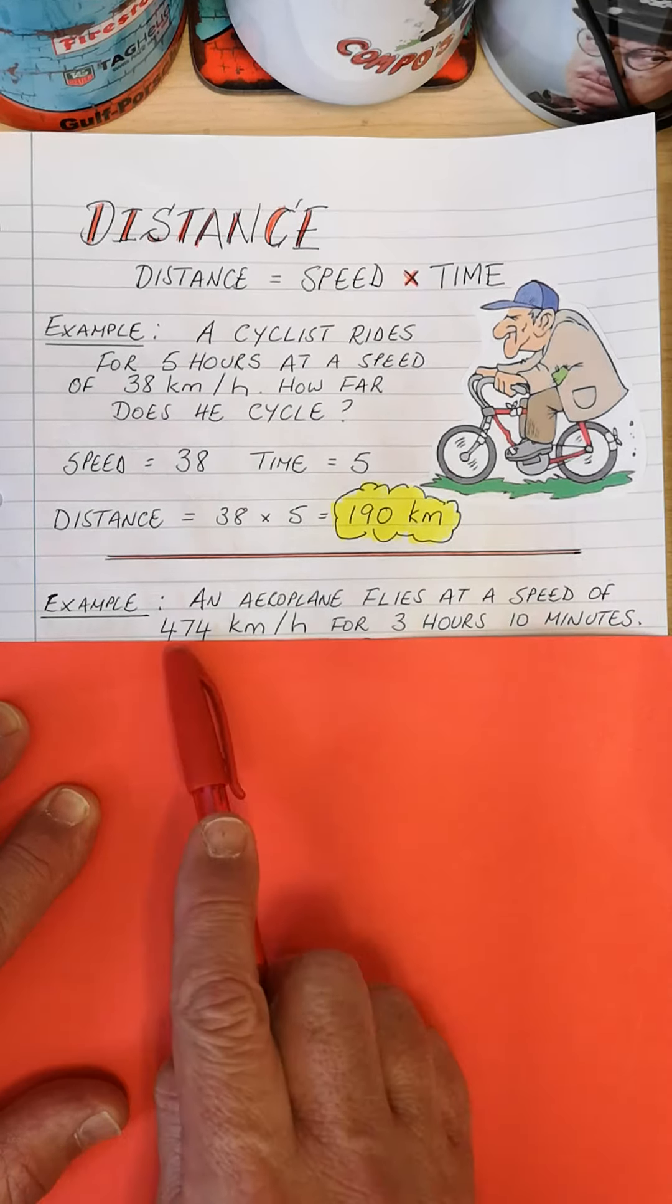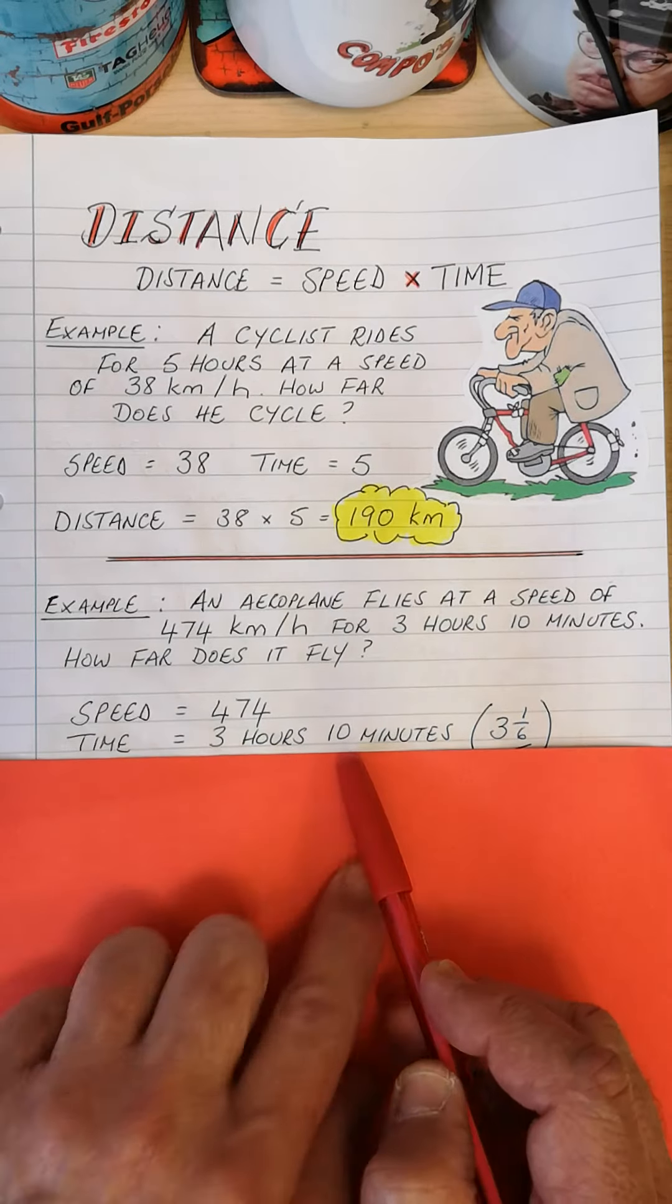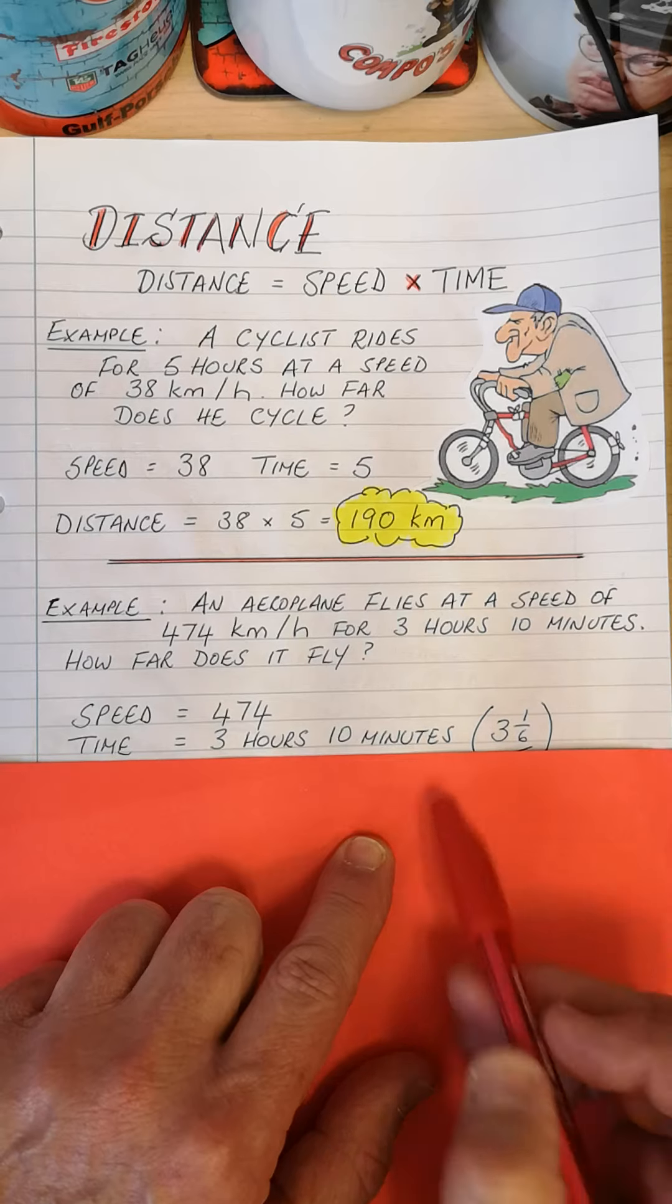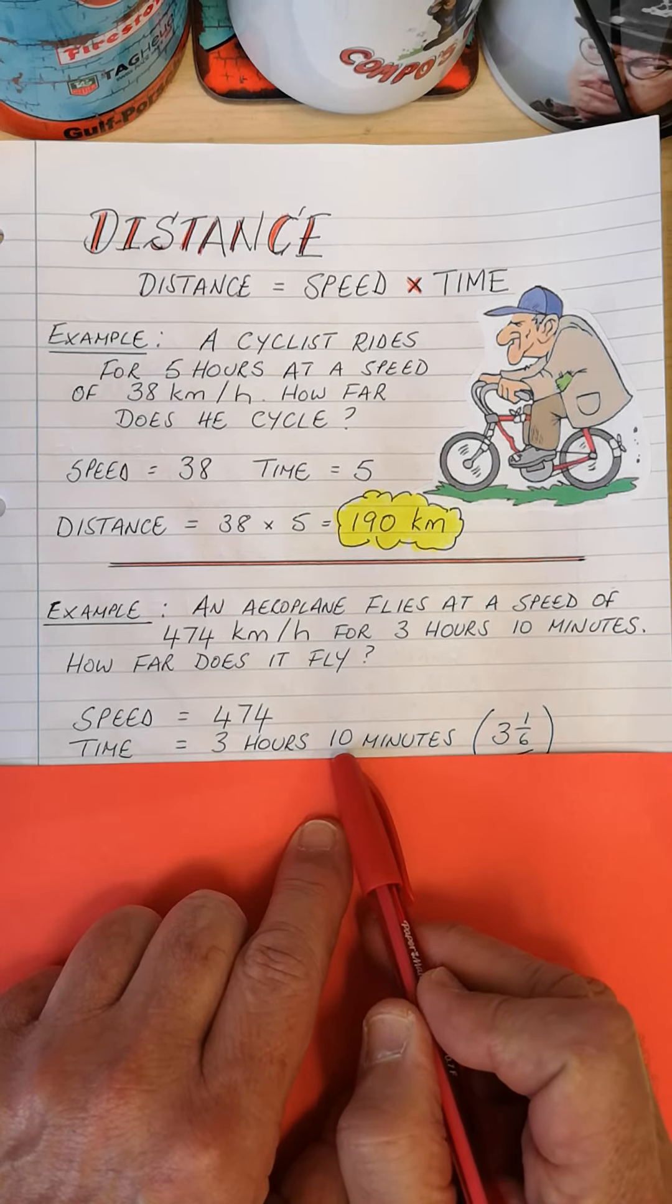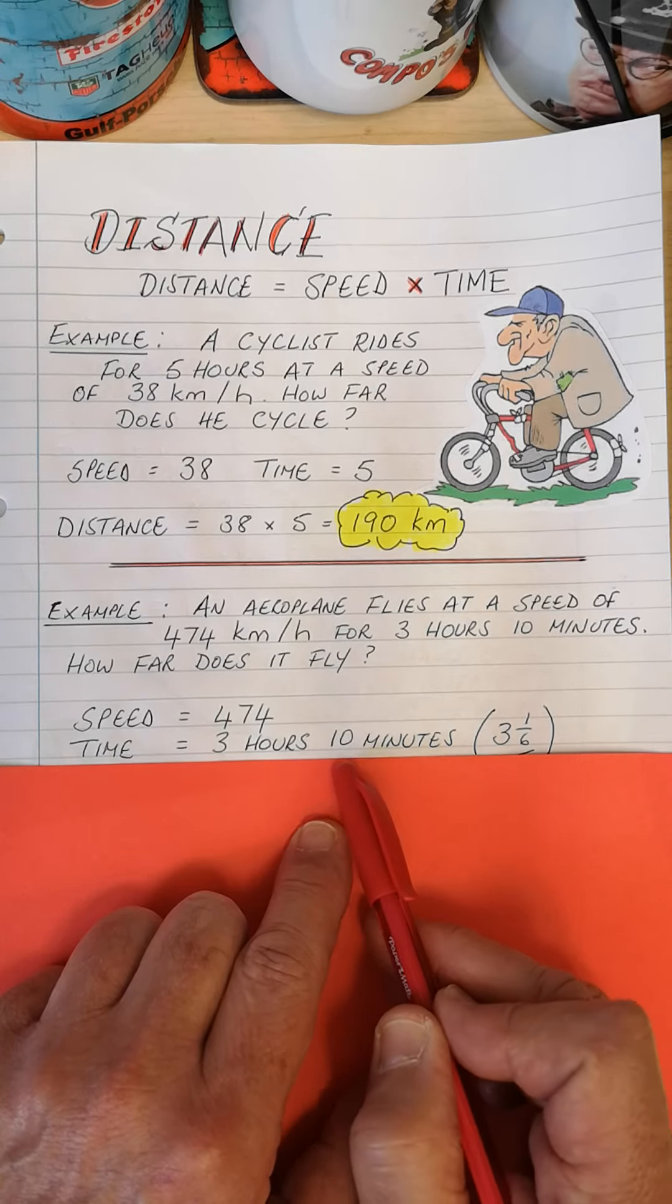Doubt it. But anyway, that's the example. Let's look at another one. An aeroplane flies at a speed of 474 kilometers an hour for three hours and 10 minutes. They've latched on 10 minutes now, makes it a little bit more difficult. Question: How far does it fly? Far is distance.